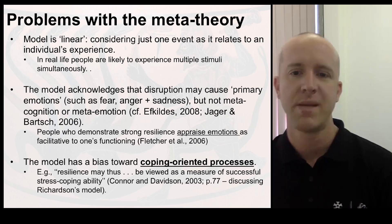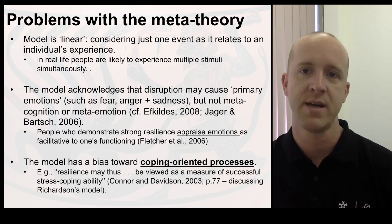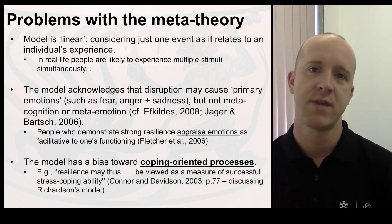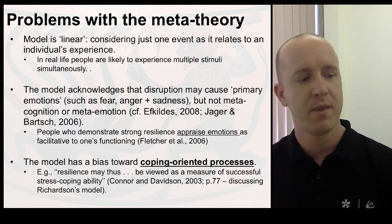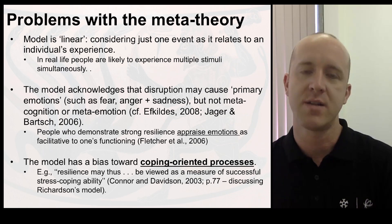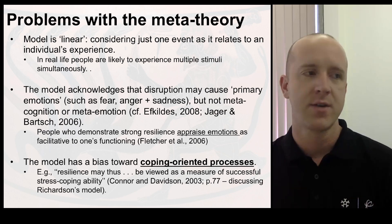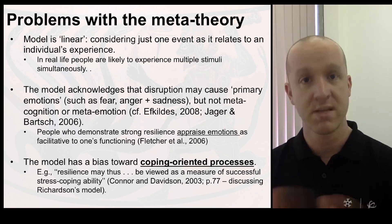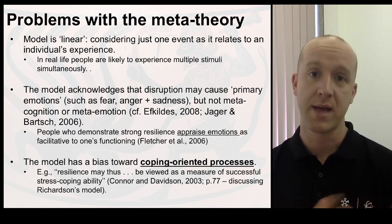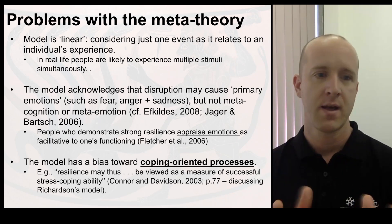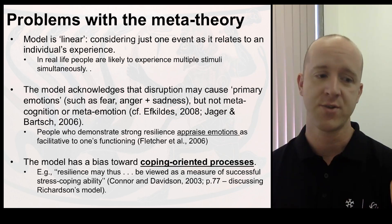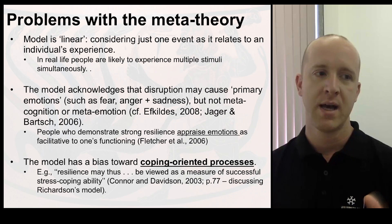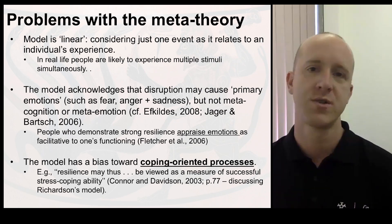Fletcher and Sarkar paid particular attention to this in their review and identified problems with it as a meta-theory of resilience. It's linear and considers just one event to be the thing that knocks you, which probably doesn't reflect real life. We are often part of a complex system — it could be the straw that broke the camel's back, with the whole system under stress and some tiny thing tipping you out of homeostasis. It's hard to say with certainty that there is one event or one stressor that causes that loss of balance.